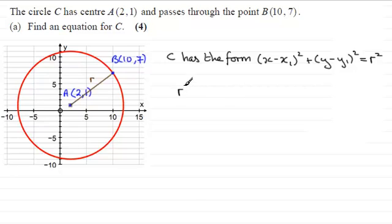In other words, r² is equal to, if we construct a right-angled triangle, then the sides here, this side here is going to be the difference between the x coordinates, which will be 10 minus 2. In other words, 8 units long. We square that and we add to that this distance squared.